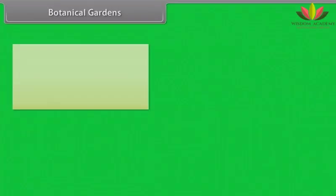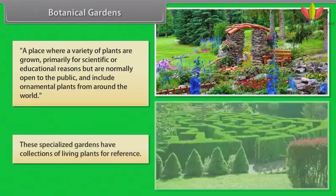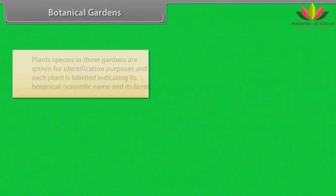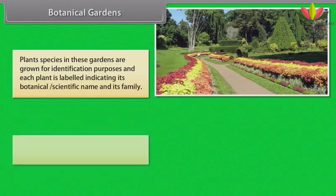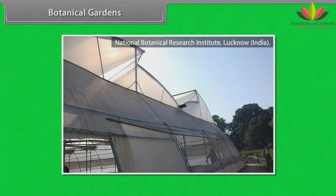Botanical Gardens: A place where a variety of plants are grown, primarily for scientific or educational reasons, but are normally open to the public and include ornamental plants from around the world. These specialized gardens have collections of living plants for reference. Plant species are grown for identification purposes and each plant is labeled indicating its botanical scientific name and its family. Famous botanical gardens include the Royal Botanical Garden, Kew, England, and the Indian Botanical Research Institute, Lucknow, India.